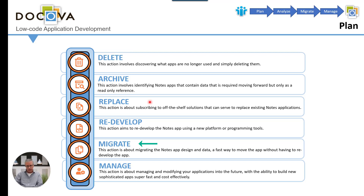Migrating. A true migration is when you're migrating the data and all the design of your Notes applications to another platform — in this case, DocOva. We have the most sophisticated migration process because it's coming to DocOva, our own product, so we can deal with all the details of all the design elements and all the data. Migrating and redeveloping go hand in hand, because what migrating does is move a whole bunch of the stuff you would otherwise have to redevelop — it's an automated redevelopment that migrates everything over for you.